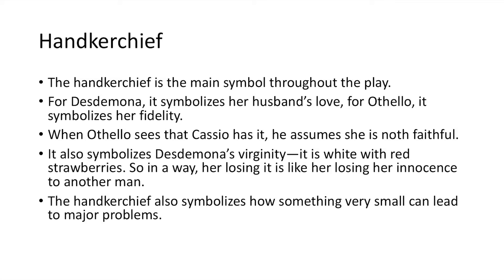When analyzing the play, there are a few key symbols to discuss. The first is the handkerchief, which is the main symbol throughout. For Desdemona it symbolizes her husband's love, and for Othello it symbolizes her fidelity — when she gives it away, he sees it as an act of infidelity. When Othello sees that Cassio has it, he assumes she is not faithful. It also symbolizes Desdemona's virginity, being white with red strawberries, so losing it is like losing her innocence. It also shows how something very small can lead to major problems.